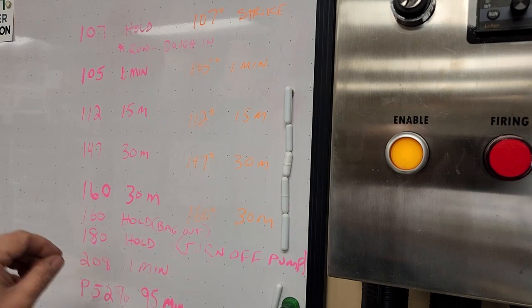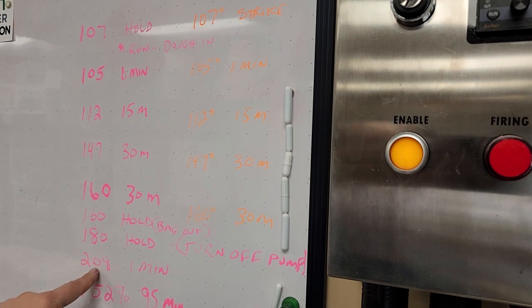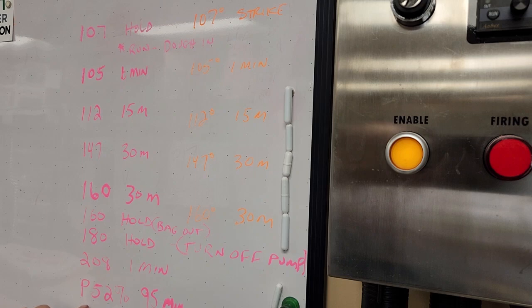That next set point is to 208 for one minute. That's just to get me up to near boiling at a quick rate. And then it automatically advances to power mode or boil mode. And that will be 52% power. And that will be set for 95 minutes.